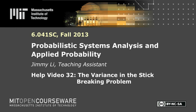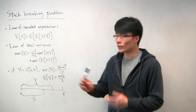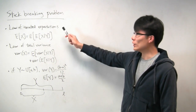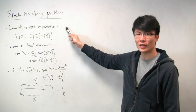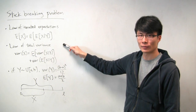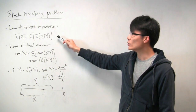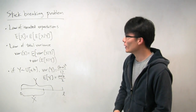In this problem, we'll get a chance to see the usefulness of conditioning in helping us to calculate quantities that would otherwise be difficult to calculate. Specifically, we'll be using the law of iterated expectations and the law of total variance. Before we get started, let's take a quick moment to interpret what these two laws are saying.